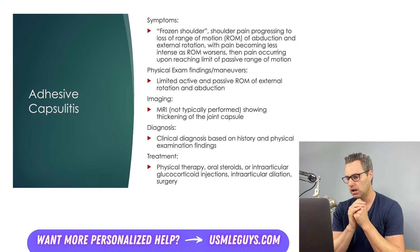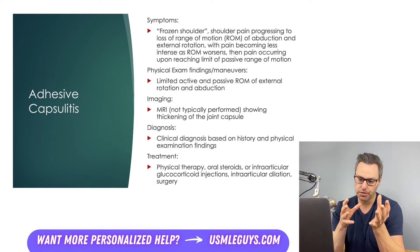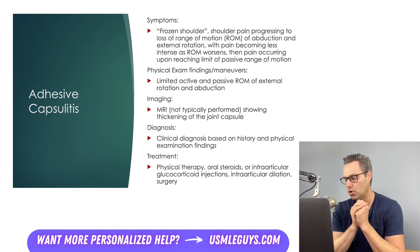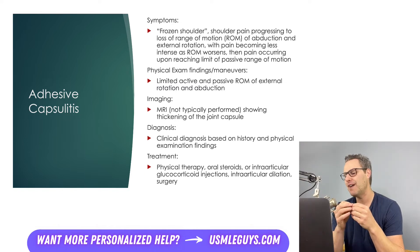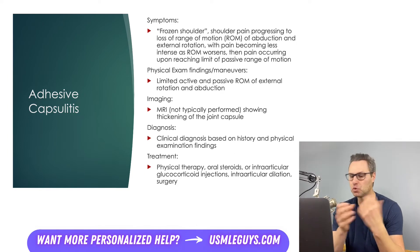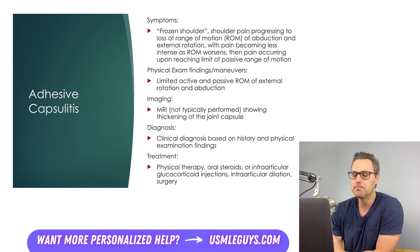Treatment for frozen shoulder is variable, and many therapies only provide temporary relief. In terms of escalating treatment: physical therapy aims to increase range of motion over time; a short course of oral steroids or intra-articular glucocorticoid injections work well for a few weeks before symptoms worsen again; intra-articular dilation aims to enlarge the capsule to allow more movement. Finally, surgery can be performed to achieve arthroscopic release of the joint if all other modalities fail.